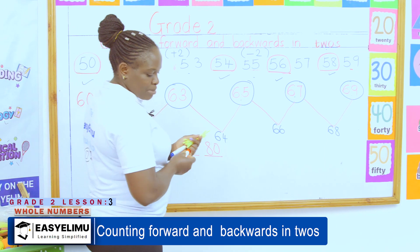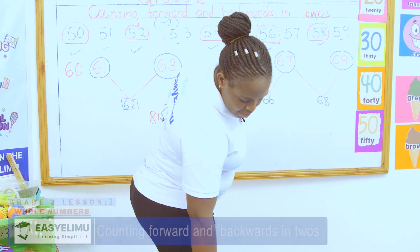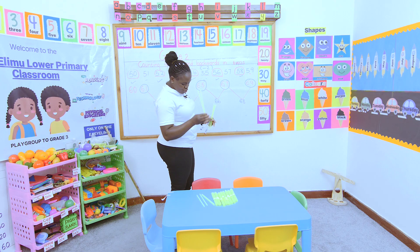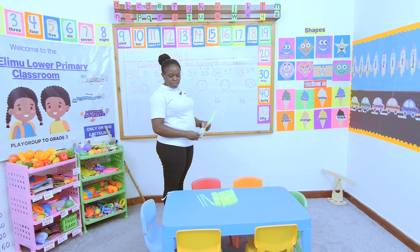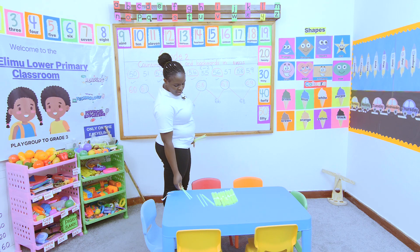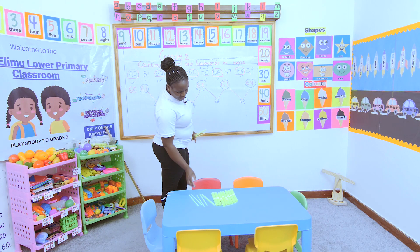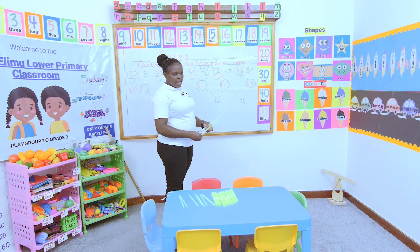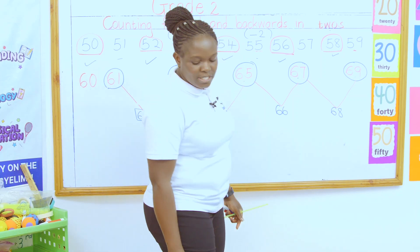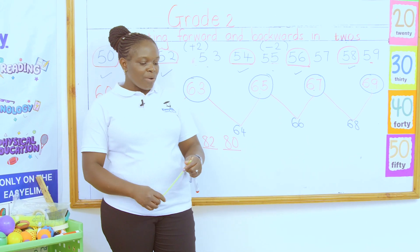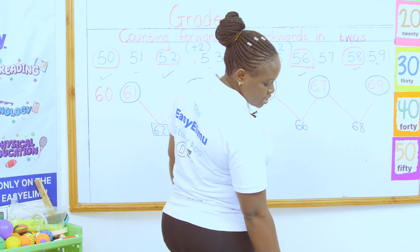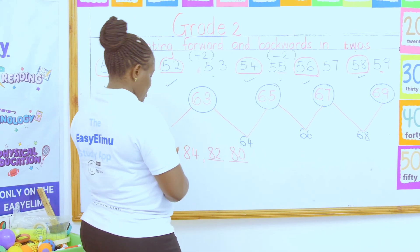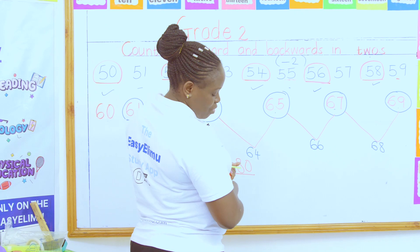And if you're supposed to add — I'm just adding here — 84. If I add another 2, because counting in twos means plus 2, so this is 84, it becomes 86. Then I count 88, and lastly 90. And from there, I will have counted in twos from 84 to 90. So my answer becomes 90 from 84.